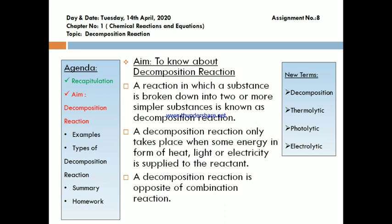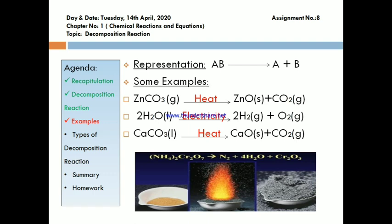For breaking the substance we have to provide energy to the reactant, and this energy helps break it down into products. A decomposition reaction only takes place when some energy in the form of heat, light, or electricity is supplied to the reactant. A decomposition reaction is just opposite to combination reaction. In decomposition, a single reactant AB, when supplied with some energy, is split into its simpler forms A and B, where AB is the reactant and A plus B are the two products.